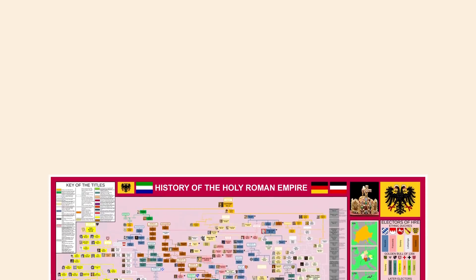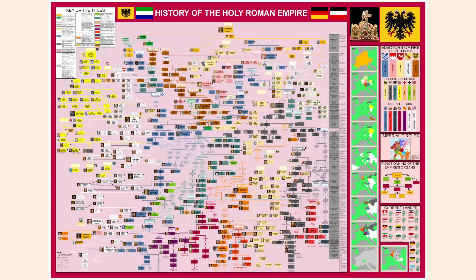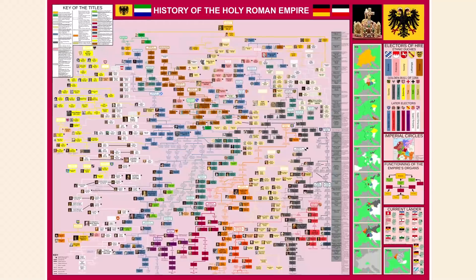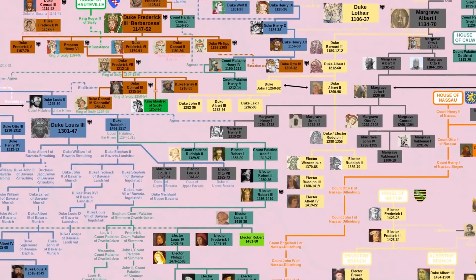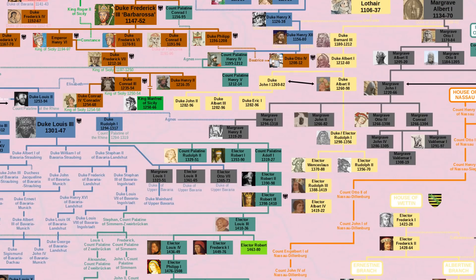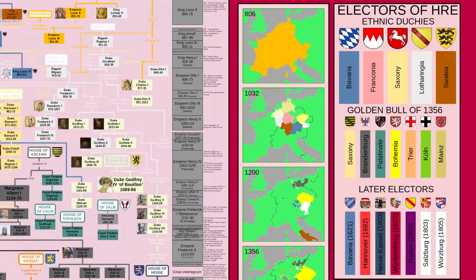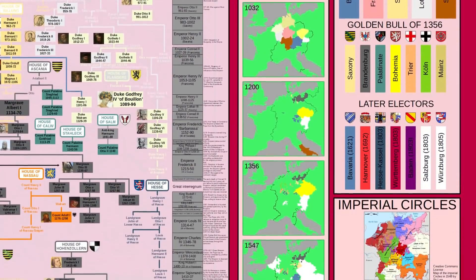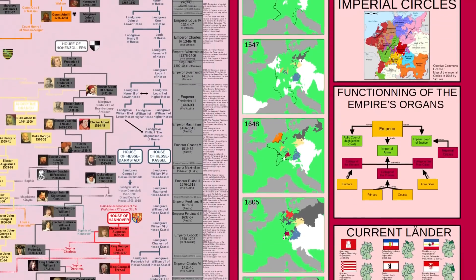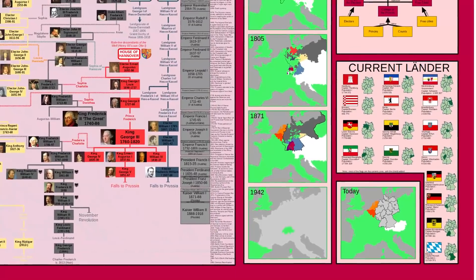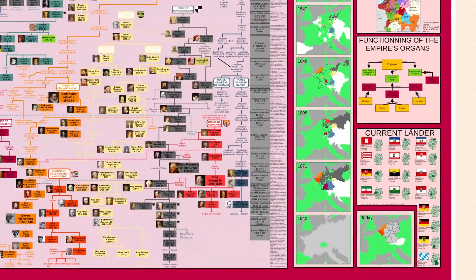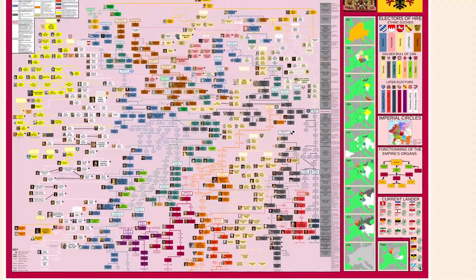Here we have the history of the Holy Roman Empire — and yet again, this is a huge chart. I think we featured this one last time. This is amazing because it not only traces the Holy Roman Emperors, but I believe all the electors and various dukes as well. Not only do you have the family tree, but over on the far right you've got some maps, some explanation, a timeline of the emperors, and in the bottom right corner the flags of the various German states today, so you can correlate that back to some of the previous duchies. Amazing amount of work. Super cool.